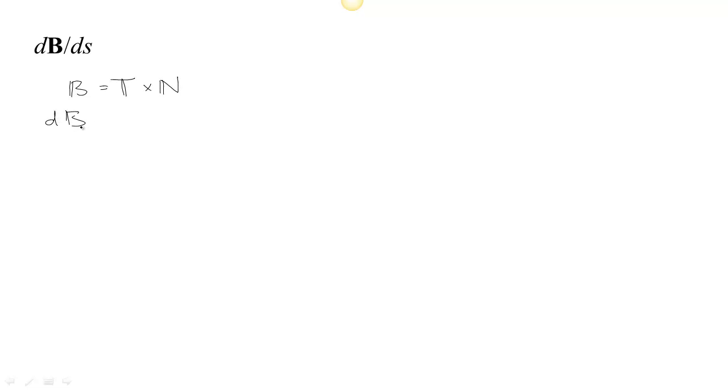So if we take the derivative of the binormal, then the product rule applies. Now be careful with the product rule with the cross product, because the order matters in cross product multiplication. But the way that you first learn the product rule is that it's the derivative of the first times the second, plus the first times the derivative of the second.